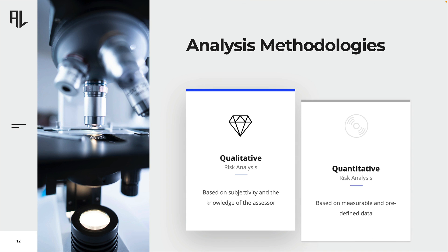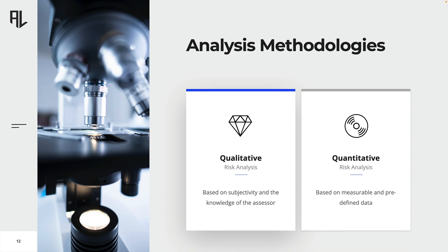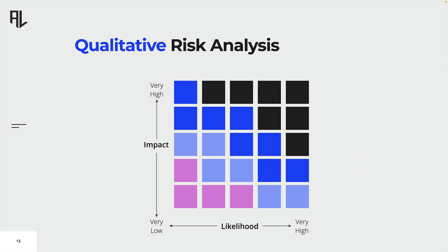There are two types of analysis methodologies: qualitative risk analysis and quantitative risk analysis. According to ISO 27005, qualitative risk analysis uses a scale of qualifying attributes to describe the impact and the probability that negative consequences will occur. Qualitative analyses are easy to understand, but they are very subjective in terms of evaluation.